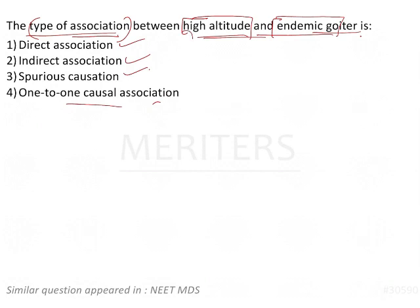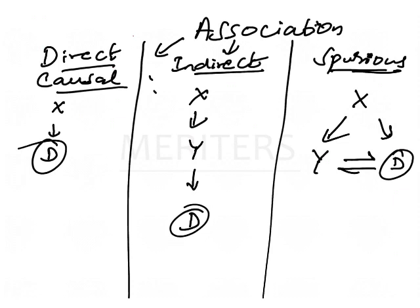This is an association-based question. Associations are basically of three types: one is direct or causal association, indirect, and spurious relation. For example, if X is a risk factor or variable...